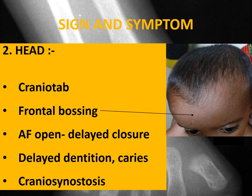The anterior fontanelle normally closes by the 18th month of age. In patients of rickets, delayed closure of the anterior fontanelle is generally seen — this is again characteristic. Delayed dentition: if no tooth has erupted by the age of 13 months, we label it as delayed dentition, and a common cause is rickets. Dental caries can also be present.